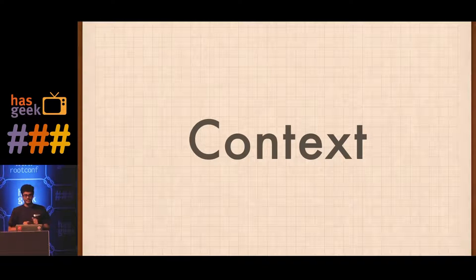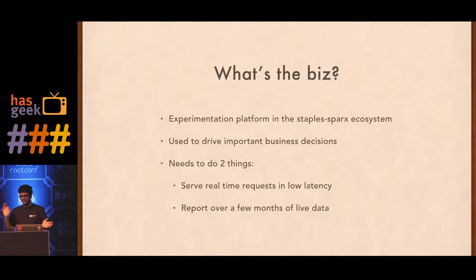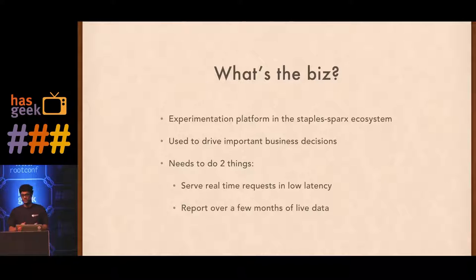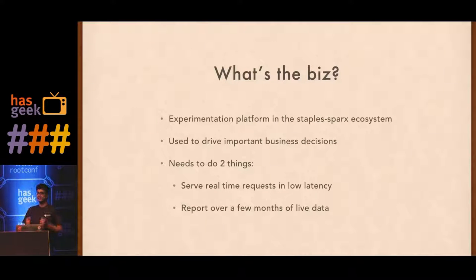Before I tell you these stories, it's essential to establish some context around why we built things the way we did. The business is essentially that of an experimentation platform — a microservice that other services talk to. Its consumers are machines and machines can call us very fast. The experimentation platform was used to drive decisions based on data: which product to use amongst two vendors, or which algorithm to use based on the numbers the platform gave them. These had to be accurate to the level of the seventh decimal point, which was kind of bizarre, but true.